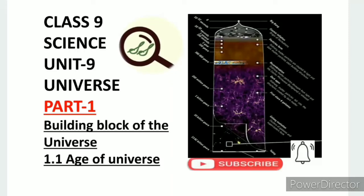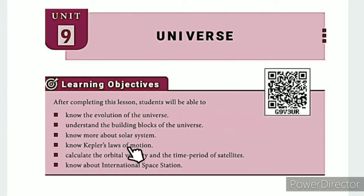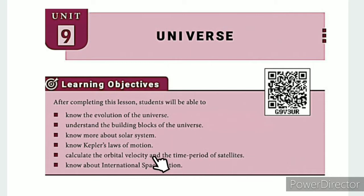Greetings from SS class 9 science, unit 9: Universe, part 1 — Building Block of the Universe, topic 1.1: Age of Universe. The lesson-level learning objectives are: know the evolution of the universe, understand the building blocks of the universe, know more about the solar system, know Kepler's laws of motion, calculate the orbital velocity and time period of satellites.